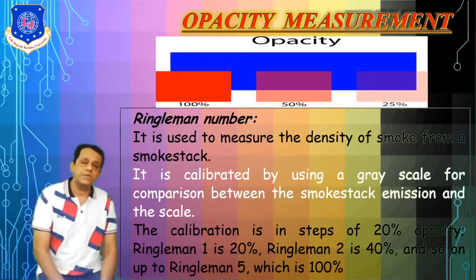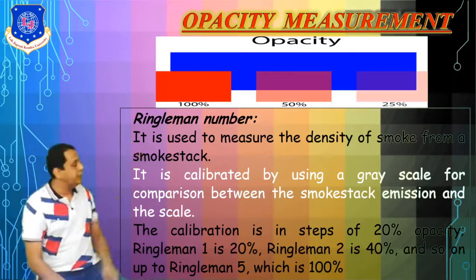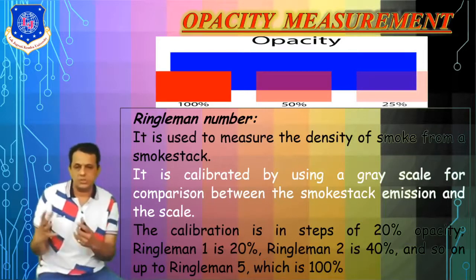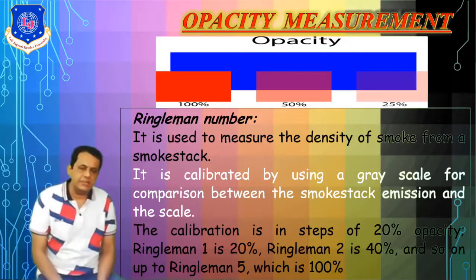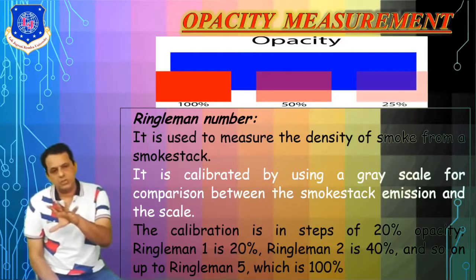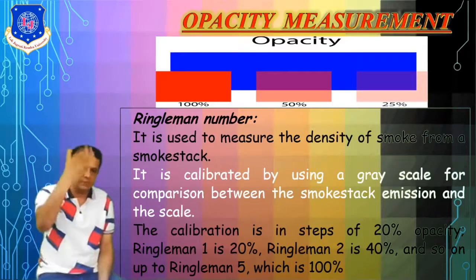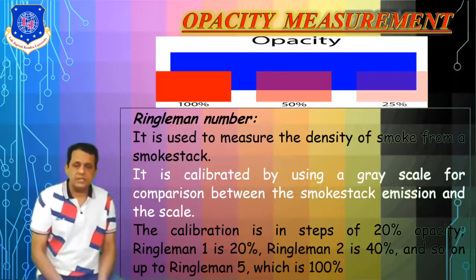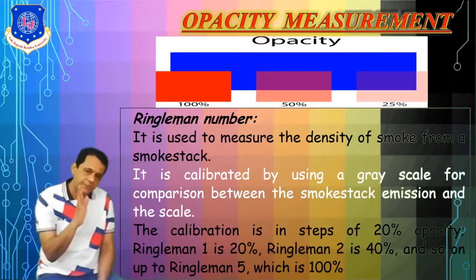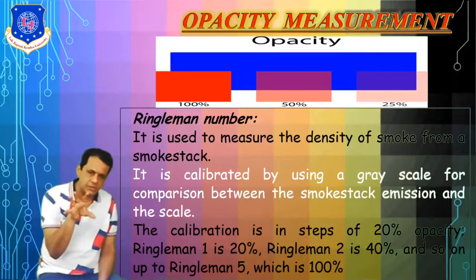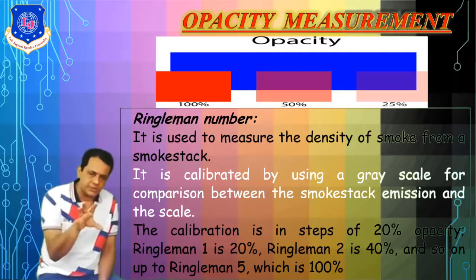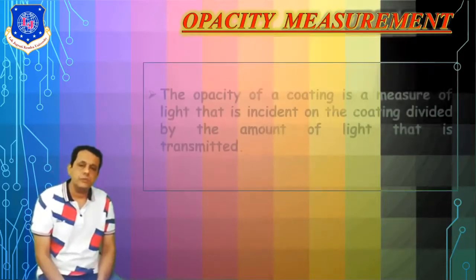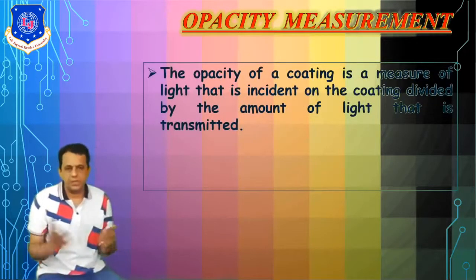Another very important term is the Ringelmann number. It is used to measure the density of smoke from a smoke stack, and it is used for calibration by comparing the smoke stack emission against a grayscale — meaning it is read against a gray color background, and this has nothing to do with digital grayscale. The calibration steps are in multiples of 20%: 20% is Ringelmann number 1, 40% is number 2, up to 100% which is number 5.